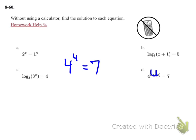Writing this now in log form, I would have log base 4 of 7 equals u.